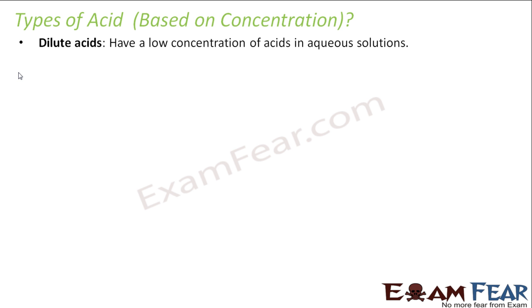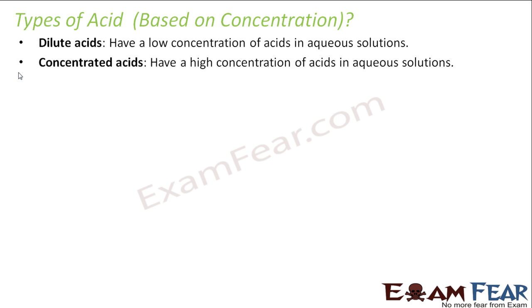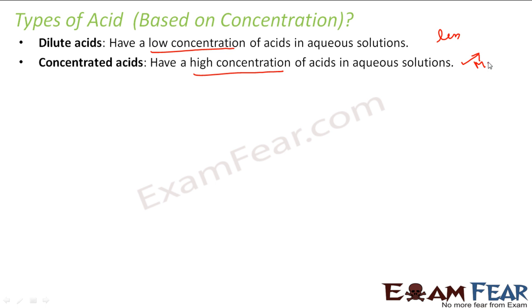We can also classify acids based on concentration — dilute acid and concentrated acid. Concentration means how much is the percentage of acid in the aqueous solution. Dilute has low concentration of acid; concentrated has high concentration. If it is concentrated, it will react more; if it is dilute, it will react less. For example, concentrated hydrochloric acid will be more powerful, while dilute hydrochloric acid is a mild version and will react less.